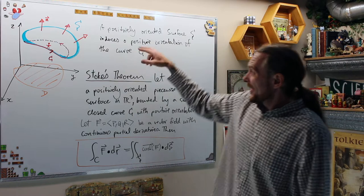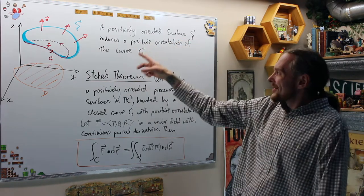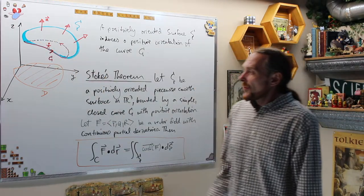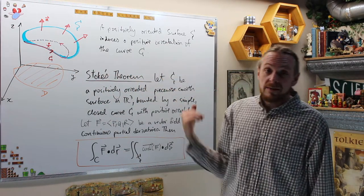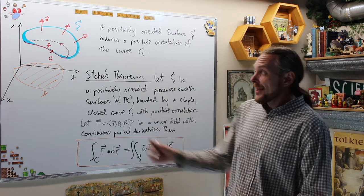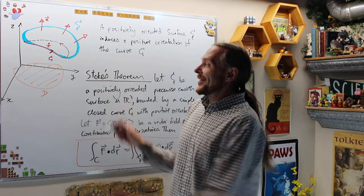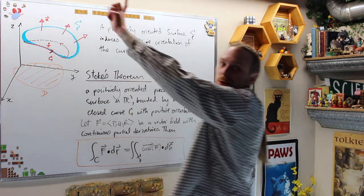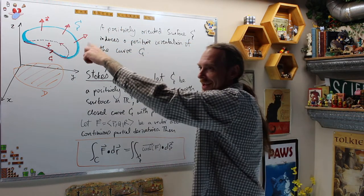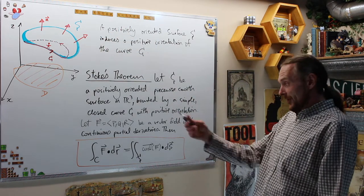What we need is a positively oriented surface S that induces a positive orientation on a curve C, which is its boundary. How do we say that boundary curve is positively oriented? If Beyoncé walks around the curve and her head is pointing in the direction of the normal vector, the surface is always to the left. That's how you define positive orientation — you just follow Beyoncé.